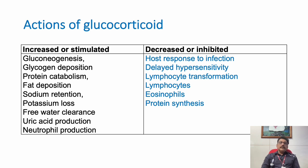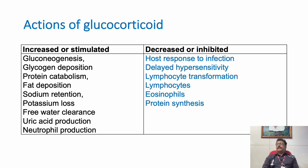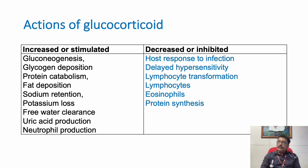Glucocorticoids can also inhibit some functions like host response to infection, delayed hypersensitivity, lymphocyte transformation, lymphocyte production, eosinophil production, and protein synthesis. Whenever we give steroids, it acutely reduces inflammation. In asthma, steroids reduce inflammation; in allergy, they reduce hypersensitivity and eosinophil count. Steroids can also reduce antibodies in our body, so antibody-mediated disorders can also be treated with steroids.